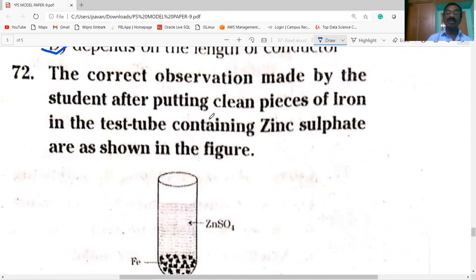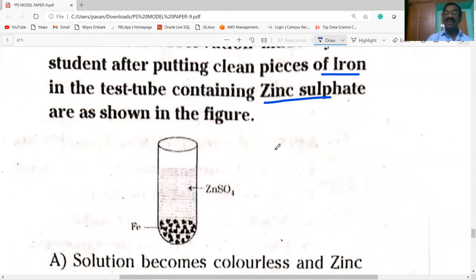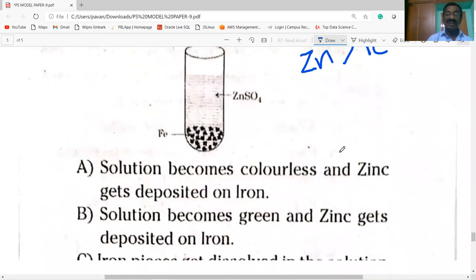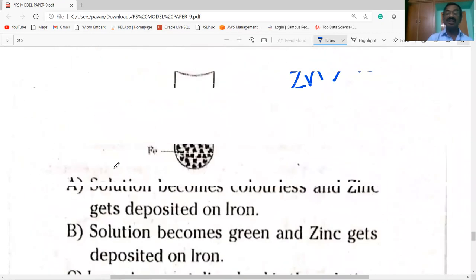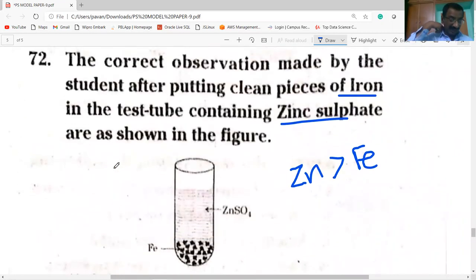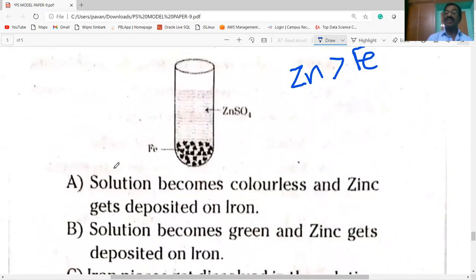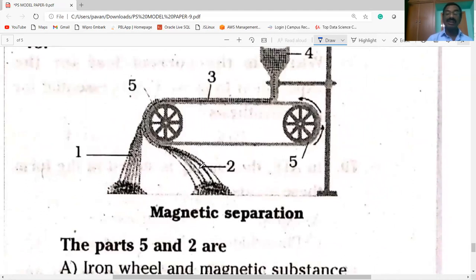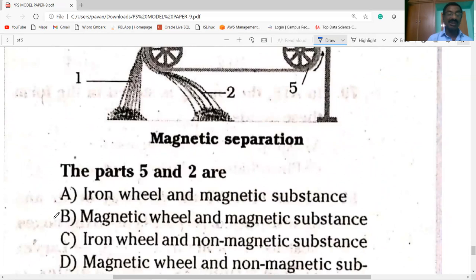The correct observation made by the student after putting clean pieces of iron in the test tube containing zinc sulfate. Zinc is more reactive than iron. No reaction is observed. Zinc is highly reactive than iron. It is magnetic material, magnetic substance. B is the correct one.